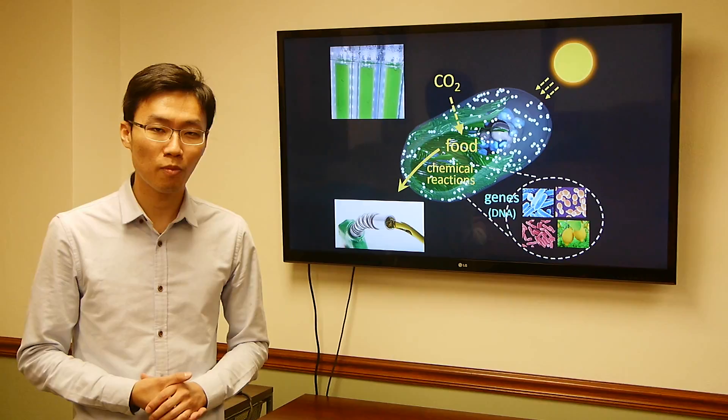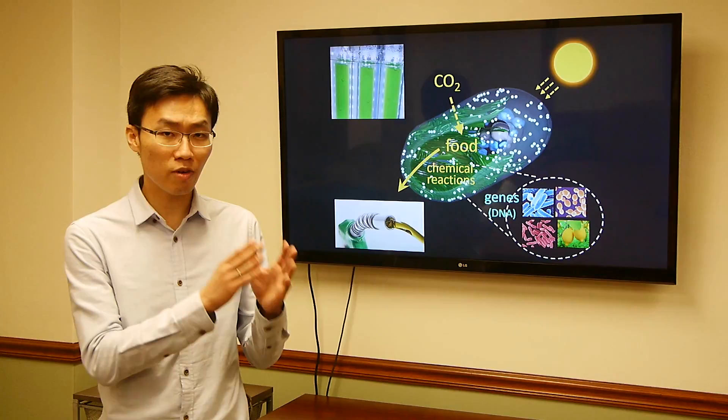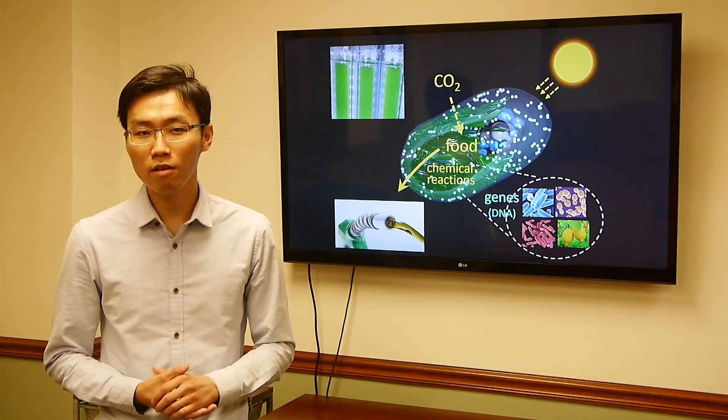These organisms can make fuel molecules because they have special genes responsible for fuel production. So we take the genes from these living organisms and put them into cyanobacteria. This enables cyanobacteria to generate chemical reactions that transform food into fuels.